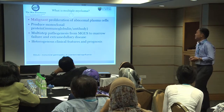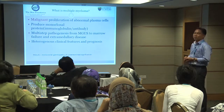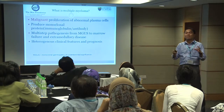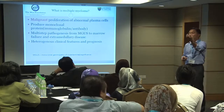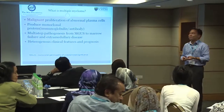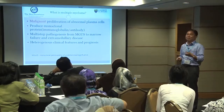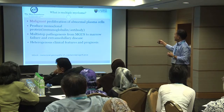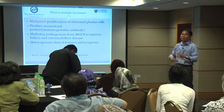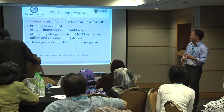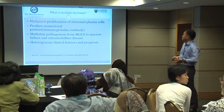Multiple myeloma is a malignant proliferation of abnormal plasma cells. Plasma cells are normal cells in our body — they produce antibodies. Plasma cells are white blood cells, we call them B cells. When we have an infection, the plasma cells produce antibodies to protect us from organisms, bacteria, or whatever.